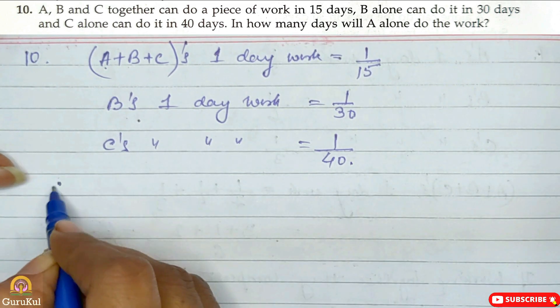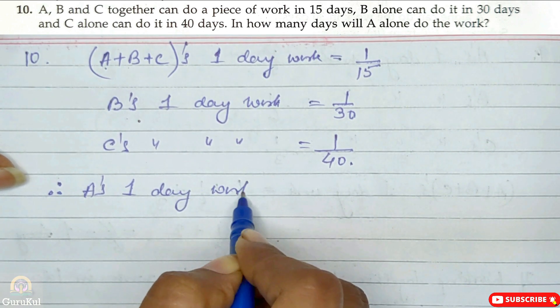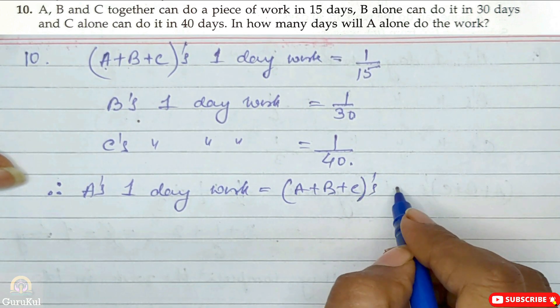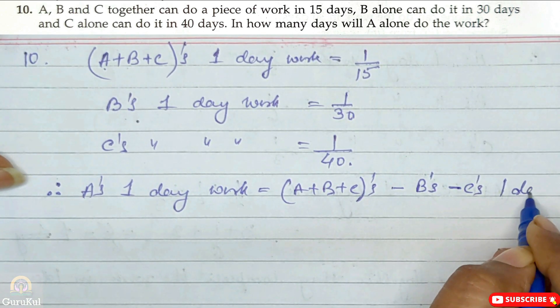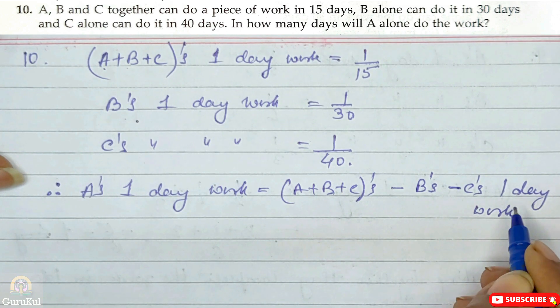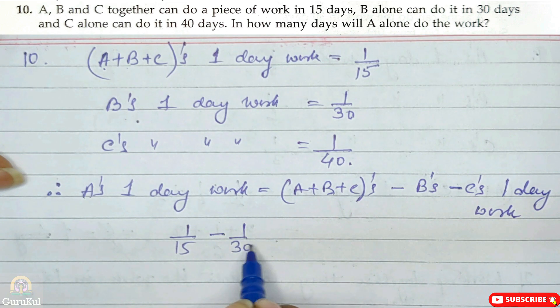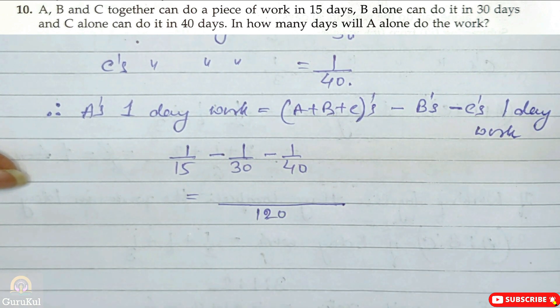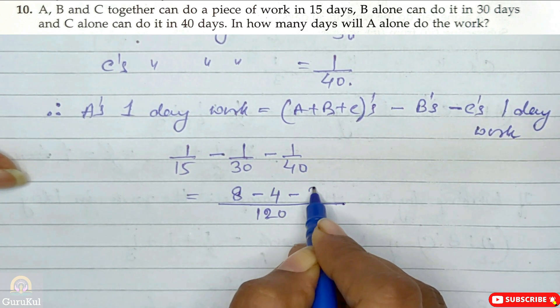Therefore, A's 1 day work will be A plus B plus C's minus B's and minus C's 1 day work. Clear? So it will be 1 by 15 minus 1 by 30 minus 1 by 40. Next step, LCM, it will be 120.